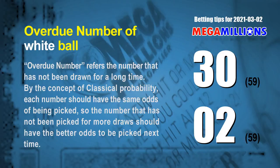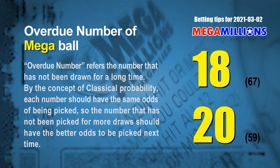The final information is overdue numbers — numbers that have not been drawn for a long time. Also by classical probability, a number not picked for more draws should have better odds next time. The two most overdue white balls are 30 and 02, both not drawn for 59 draws. The two most overdue Mega Balls are 18 and 20 — Mega Ball 18 has not been drawn for 67 draws, and Mega Ball 20 has not been drawn for 59 draws.